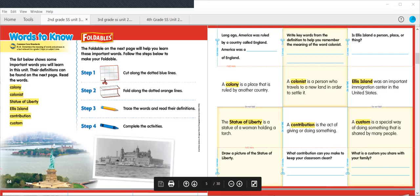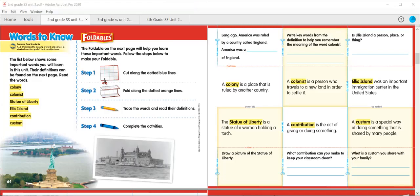All right. So, our vocabulary words for this week are going to be the word colony, colonist, statue of liberty, Ellis Island, contribution, and custom. So, over on page 65, where you need to fill out the words, we're going to use our words to help us fill in the blank. Colony is a place that's ruled by another country. So, over here, we know we can put in the word colony. America was a colony of England because it was ruled by England at the time.